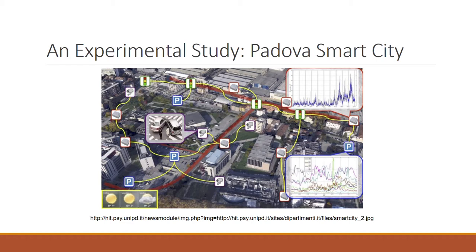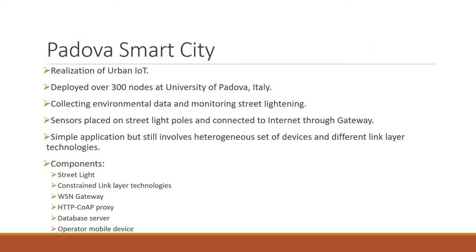An experimental wireless sensor network testbed with more than 300 nodes was deployed at the University of Padova as a proof of concept. The target application consists of a system for collecting environmental data and monitoring the public street lighting system by means of wireless nodes equipped with different kinds of sensors placed on street light boards and connected to the internet through a gateway unit. The system collects environmental parameters such as carbon dioxide, carbon monoxide levels, air temperature, and humidity, and checks the correct operation of the public lighting system by measuring light intensity at each post. This system, while simple, employs a number of different devices and link layer technologies, representing most of the critical issues in designing an urban IoT system.